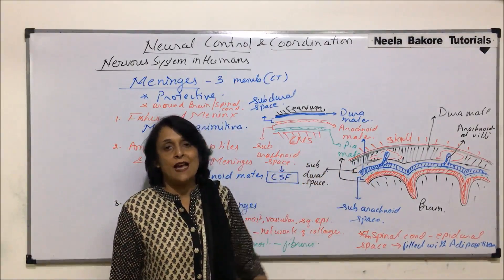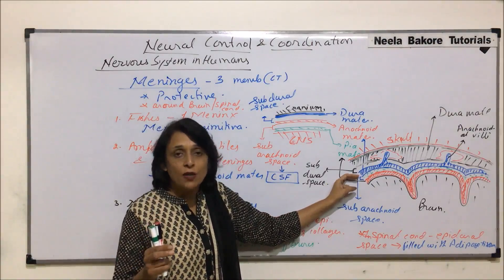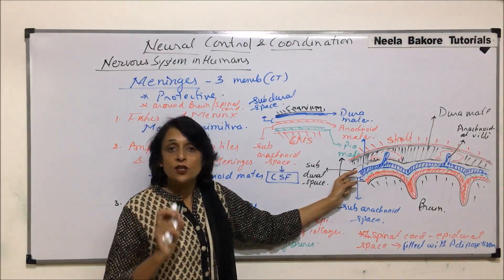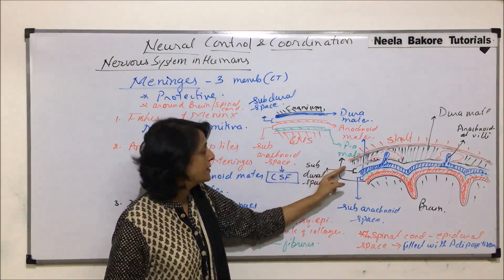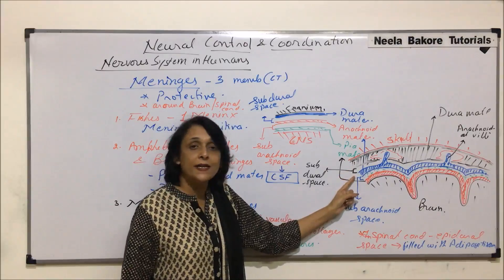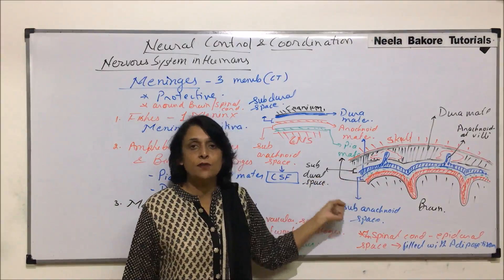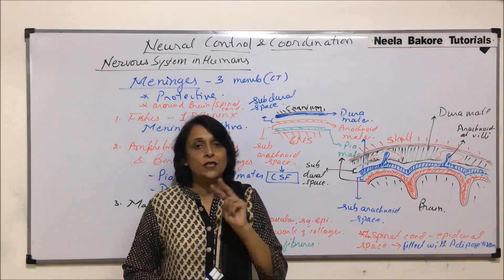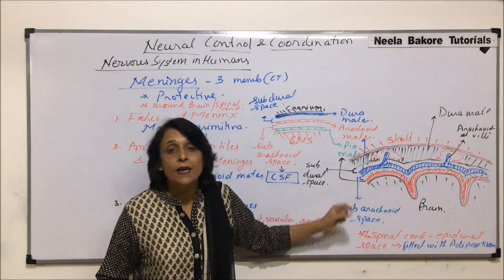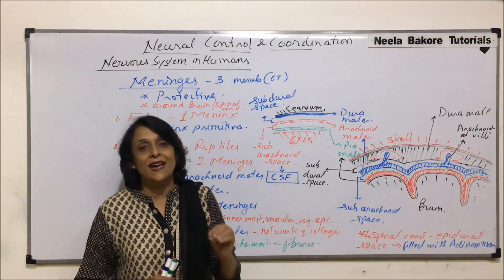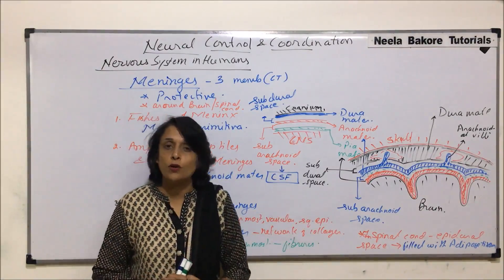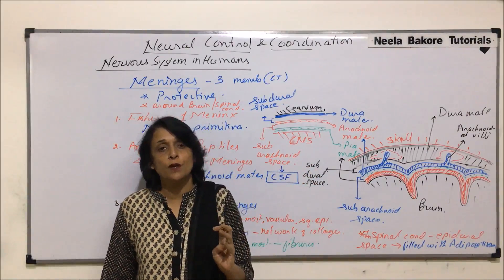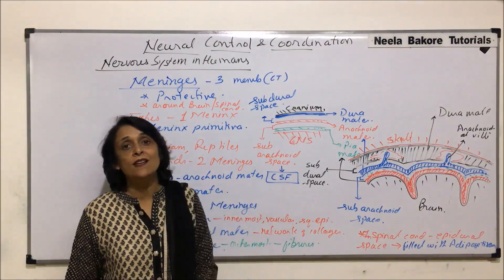These three layers protect our central nervous system. From inside out: innermost is pia matter — vascular, thin, made up of squamous epithelium. Middle is arachnoid matter — named for its network of collagen fibers, with projections called arachnoid villi that extend into the dura matter. Outermost is dura matter. Subdural space lies between dura and arachnoid; subarachnoid space lies between arachnoid and pia matter and is filled with cerebrospinal fluid. These membranes and fluid protect the brain and spinal cord from mechanical shocks. Fishes have one meninx, amphibians/reptiles/birds have two, and mammals including humans have three meninges.